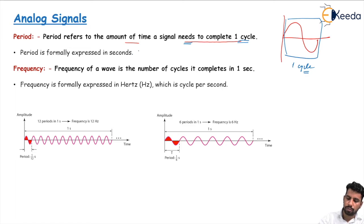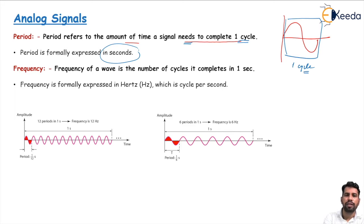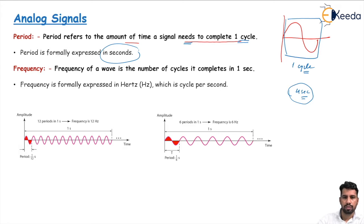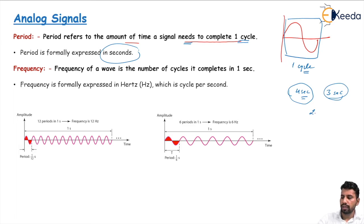Period is normally expressed in seconds because it is a measure of time — how many seconds a sine wave takes to complete one cycle. For example, if this one takes four seconds, then four seconds is the period of this cycle. In another representation, if it takes three seconds, then three seconds is the period. Two seconds means two seconds is the period of that cycle.